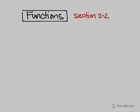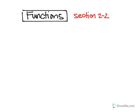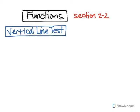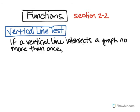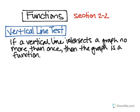We're going to continue our discussion on functions in section 2-2, and the first thing we're going to go over is the vertical line test. Here's the definition: if a vertical line intersects a graph no more than once, then the graph will be a function.